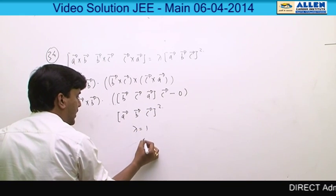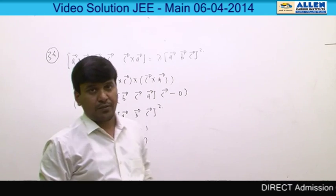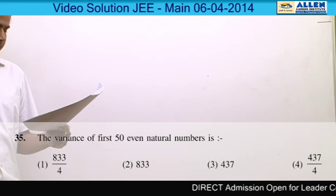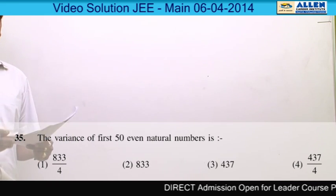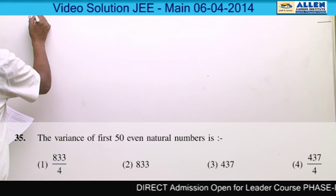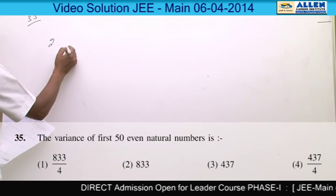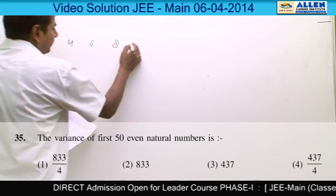Question number 35: In this question we have to find the variance of first 50 even natural numbers. First 50 even natural numbers means 2, 4, 6, 8, and so on up to 100.